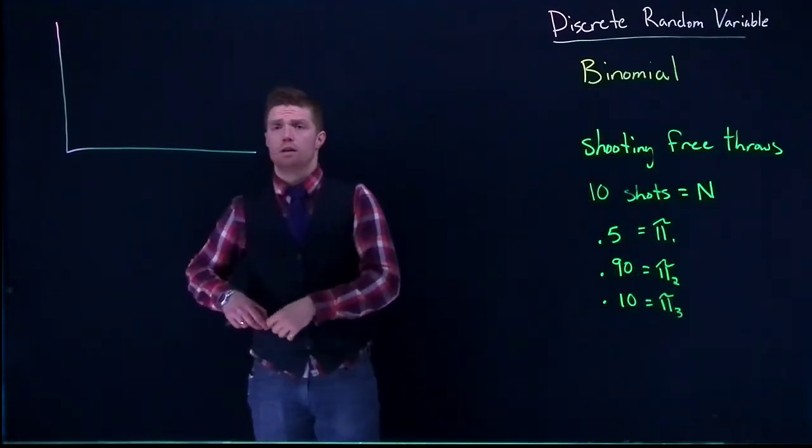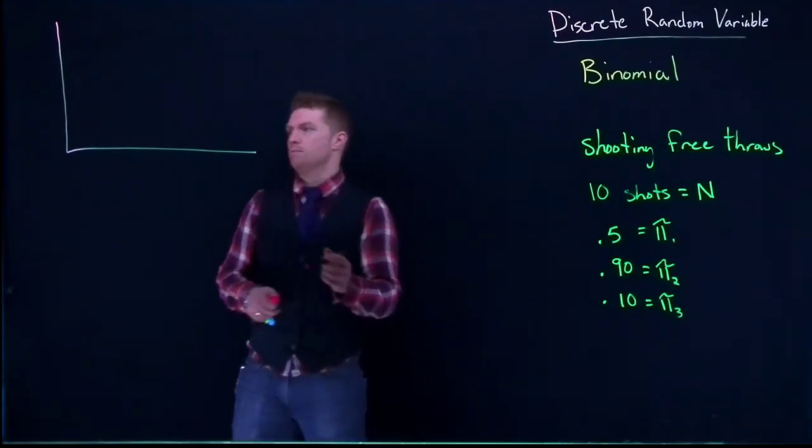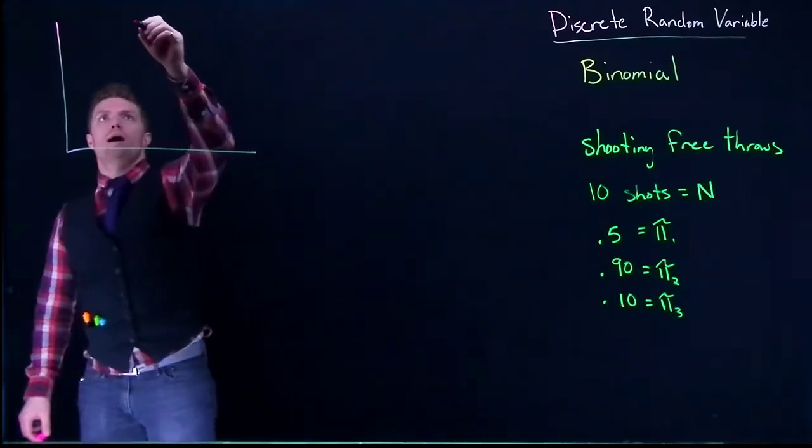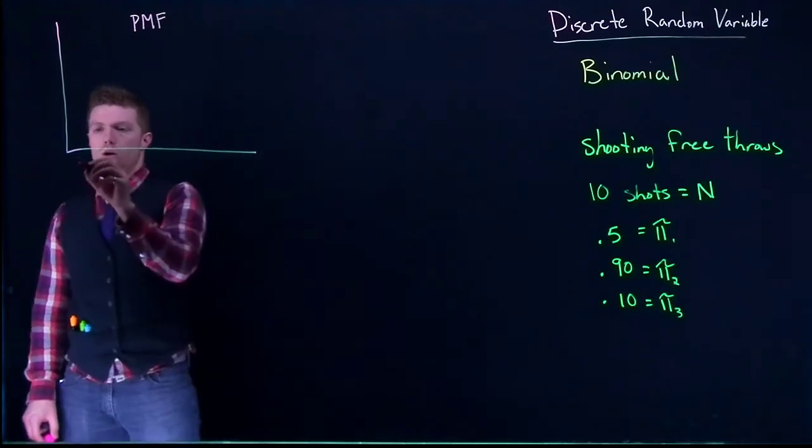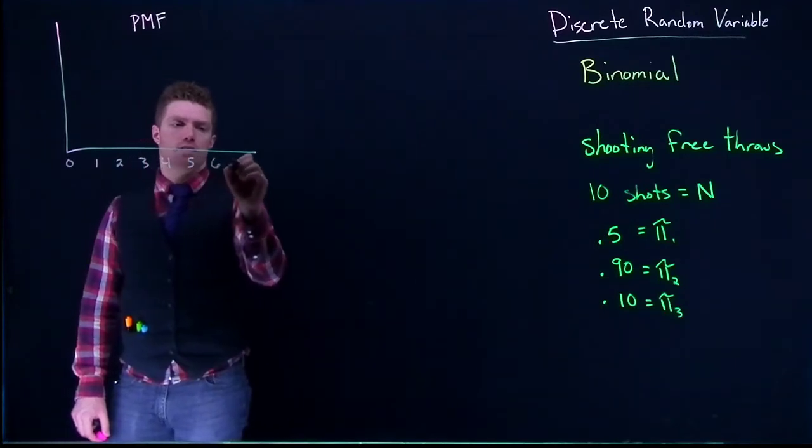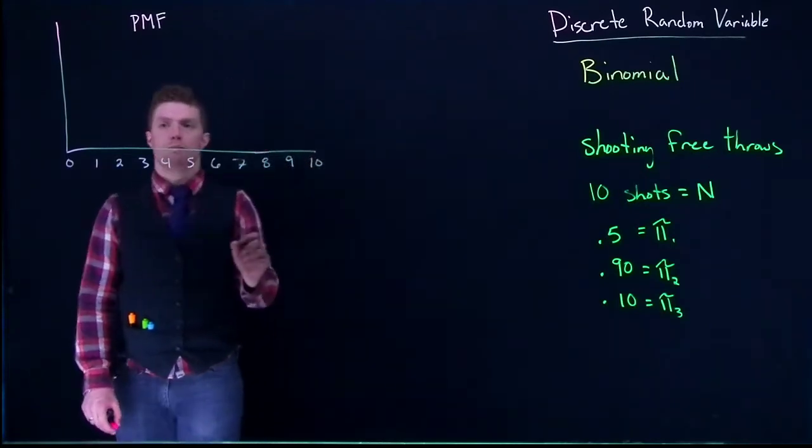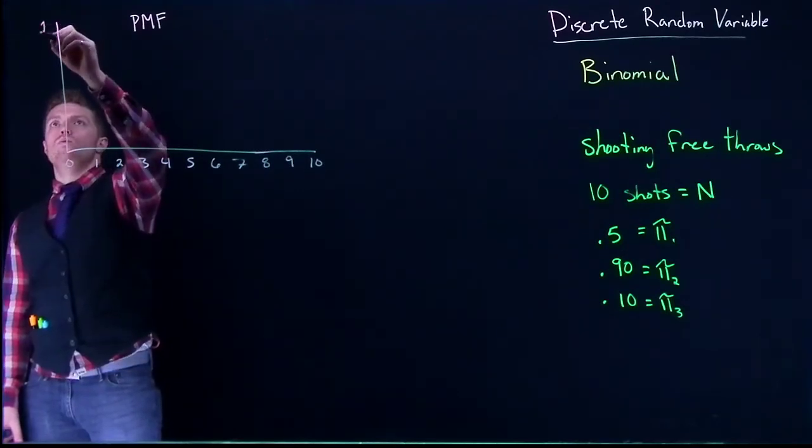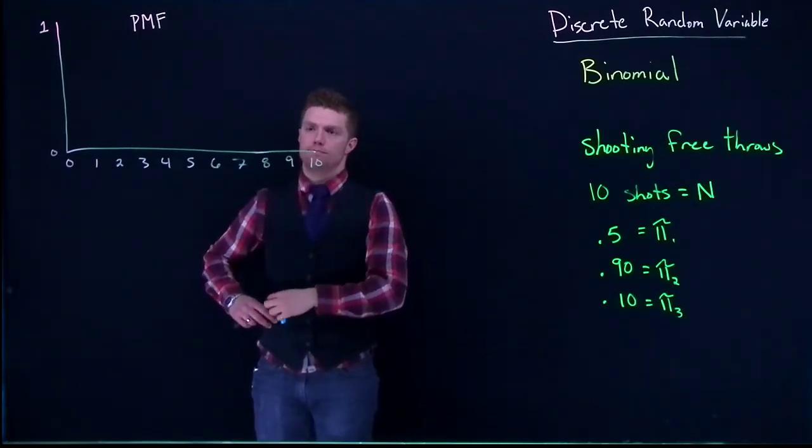We're going to do graphs of the probability mass functions roughly for what those guys are supposed to look like. We're plotting out the probability mass function, our PMF. On the bottom is going to be our support. So we'll have 0, 1, 2, 3, 4, 5, 6, 7, 8, 9, and 10. That's going to be all of our possible outcomes. And we go from 0 to 1 as our possible probabilities.